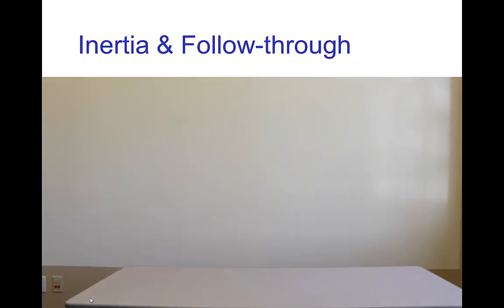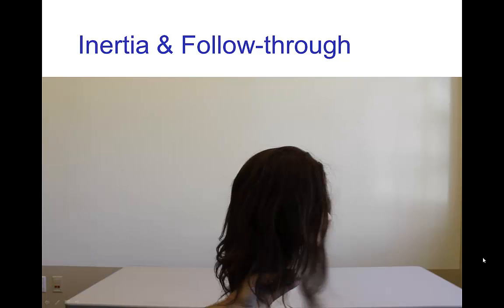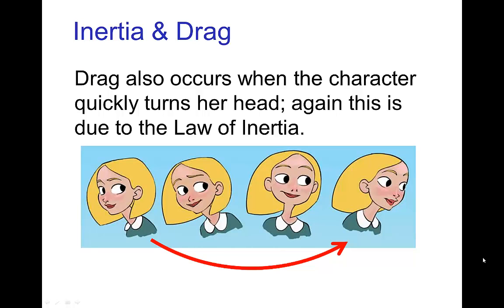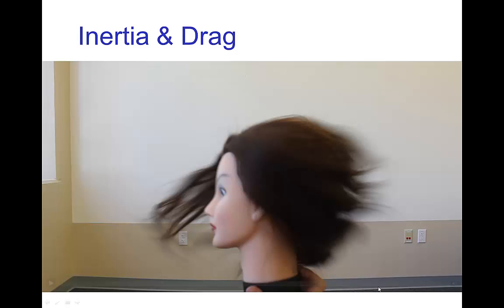You can see the wisp of hair that flies forward when the head comes to a stop. We also have a similar drag when the character swings her head around — the hair is trailing behind, again the same effect of inertia. Here's a quick example of that.